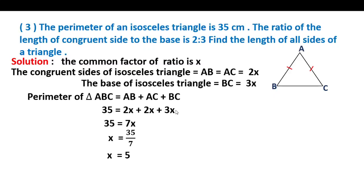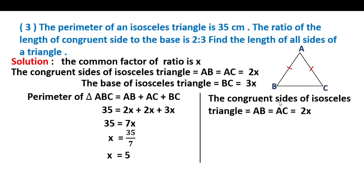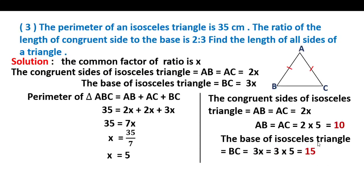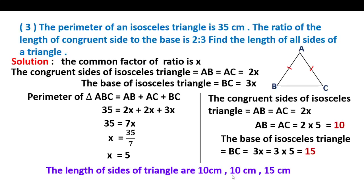Now substituting x = 5 to find all three sides. The congruent sides: AB = AC = 2x = 2 × 5 = 10 cm. The base of the isosceles triangle: BC = 3x = 3 × 5 = 15 cm. Therefore the lengths of the sides of the triangle are 10 cm, 10 cm, and 15 cm.